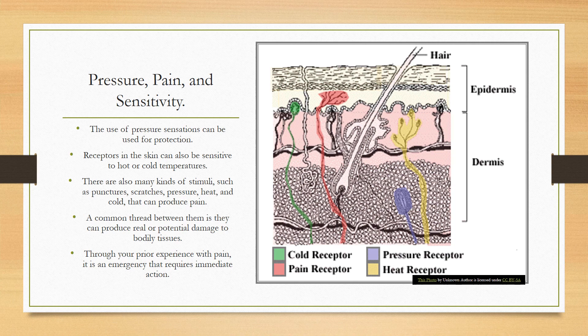The use of pressure sensations can serve for protection. The four types of receptors in the skin are: cold receptors (green), heat receptors (yellow), pressure receptors (blue-purple), and pain receptors (red). You can see hair in the diagram — when we pull hair from our arm or head, there's a pain receptor running right through the hair root, which is why it hurts so much.